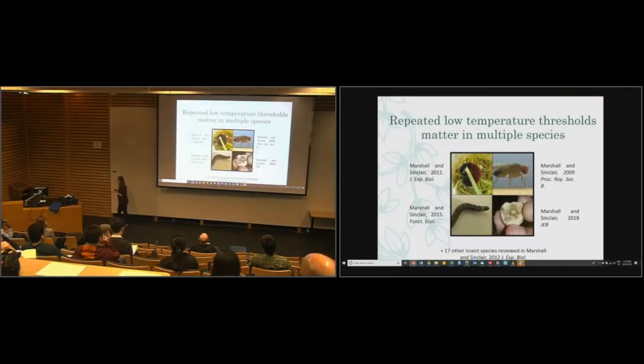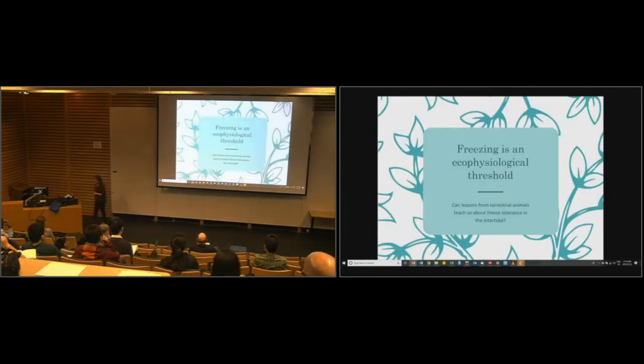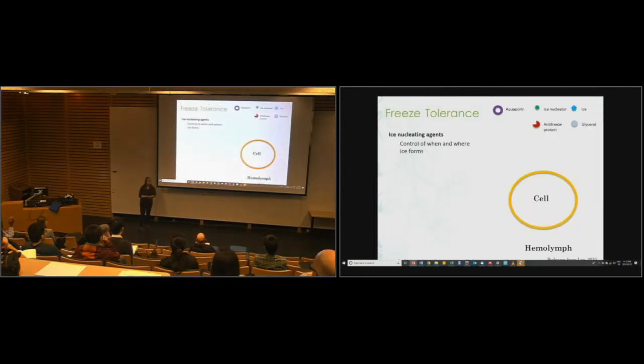Through my PhD, I looked at a whole variety of different non-linearities in low temperature exposures, using spruce budworm, the gall fly, some woolly bears, all kinds of different organisms. What I found was actually crossing these thresholds is either energetically costly or it can cause a lot of damage. I really think that these non-linearities are worth thinking about. So freezing is an eco-physiological threshold. What I wanted to do is take some of these lessons from terrestrial animals and apply them in the intertidal.